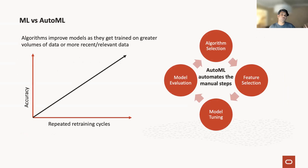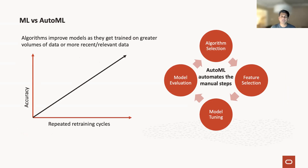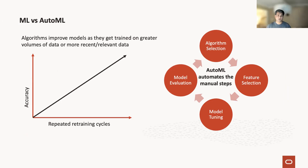What's the difference between ML and AutoML? AutoML accelerates or automates the manual steps in a machine learning exercise of algorithmic selection, feature selection, tuning the models, evaluating which is the appropriate model, and then going back in a circle with repeated training cycles to converge on a good model that matches your scores. That's the basic difference between ML and AutoML.